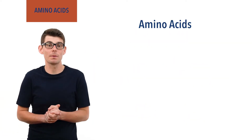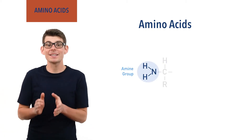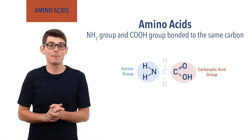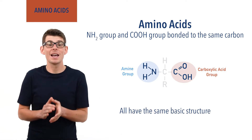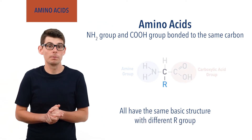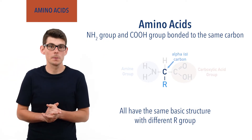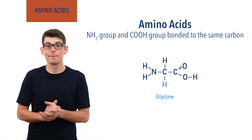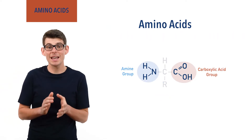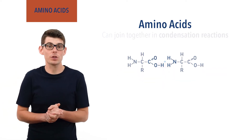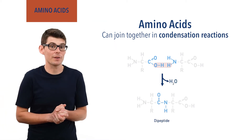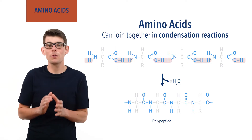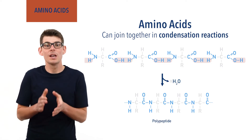Amino acids are a class of organic compounds that all have an NH2 group and a carboxylic acid group. There are naturally occurring amino acids that all have the same basic structure with the amine and carboxylic acid groups at each end, with a different R group bonded to the central carbon — sometimes called the alpha carbon. The simplest amino acid is glycine and has only a hydrogen as the R group. The amine and carboxylic acid groups enable amino acids to join together in condensation reactions, forming dipeptides when two amino acids join and polypeptides when many join in a long chain, enabling the formation of proteins — essential macromolecules in all living organisms.